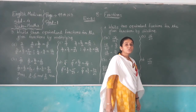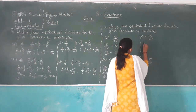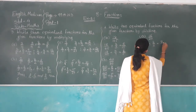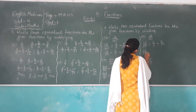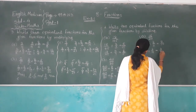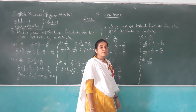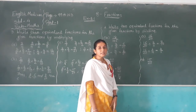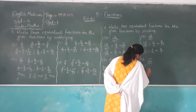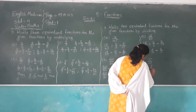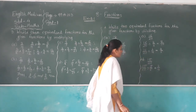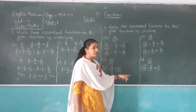Sixteen and twenty. First we try with two: eight twos are sixteen and ten twos are twenty. Again, sixteen out of twenty divided by four over four: four fours are sixteen and four fives are twenty. So eight over ten and four over five are equivalent fractions of sixteen over twenty.